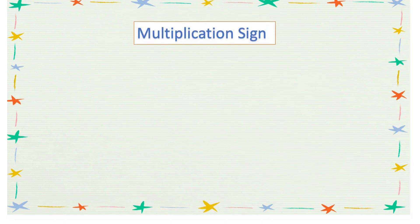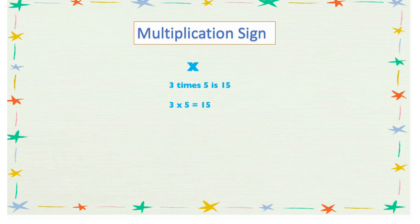To solve multiplication problems we need to know the multiplication sign. In mathematics, we use this symbol as the multiplication sign. So 3 times 5 can be written as 3 × 5 = 15, and it can also be written vertically like this.